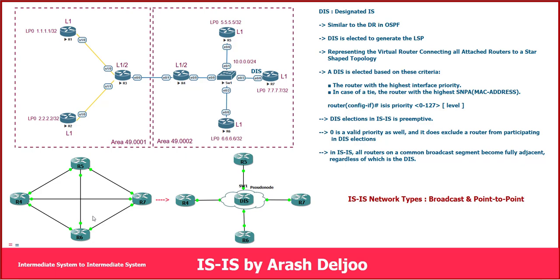When configuring ISIS on the Ethernet interfaces of R4, R5, R6, and R7, the number of neighborships is determined as follows. Because these are Ethernet links, R4 can establish neighborship with R5, R6, and R7. The number of neighborships increases with the number of routers. The formula is N × (N-1) / 2. For example, with four routers: 4 × 3 / 2 = 6 total neighborships.